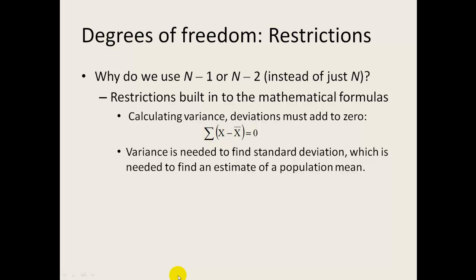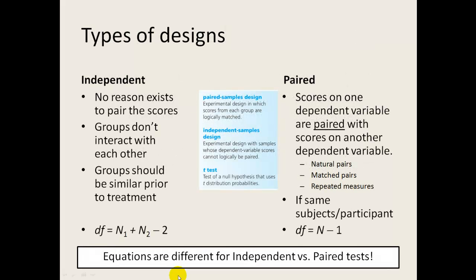Final thing for lecture 10A is types of designs. There are designs for two sample designs that the data sets can be considered to be independent from each other, so there isn't any crossover between the two samples. There are also paired sets of designs where the scores are paired with another score. And this can happen because of natural pairs, matched pairs, or repeated measures. To me, the big giveaway that you're dealing with a paired design, especially when working through Spatz's problems, is that he tends to actually use the word paired in his question prompt. So if you see that, be highly suspicious that it's going to be a paired design.